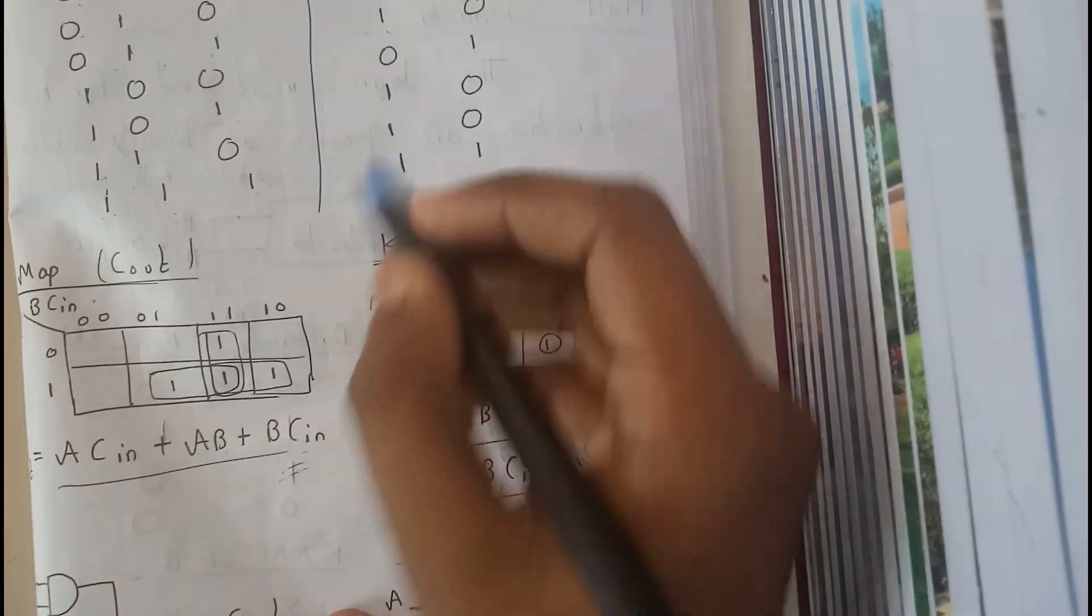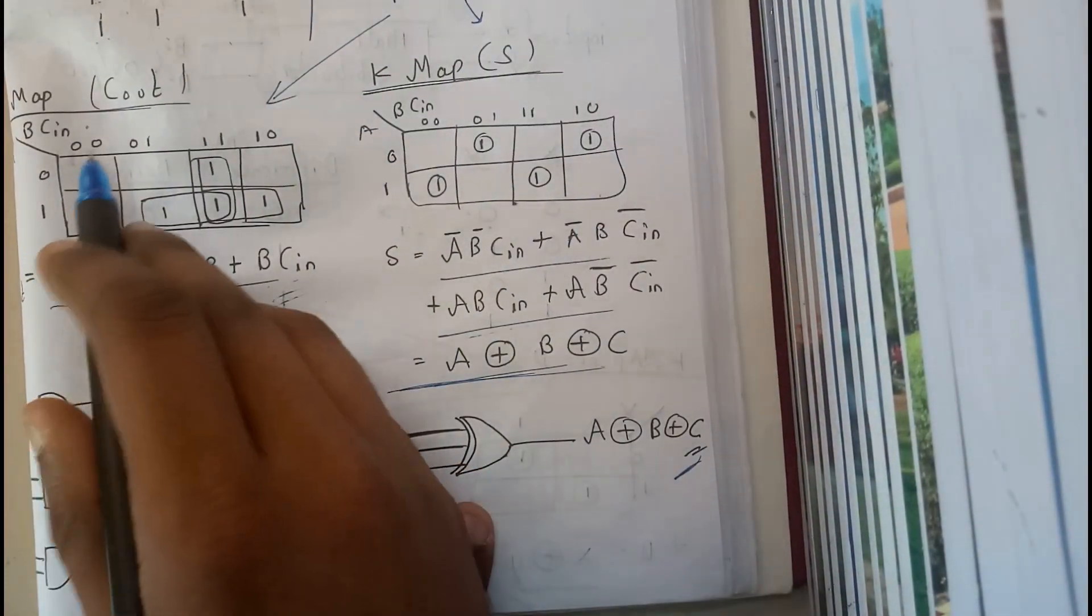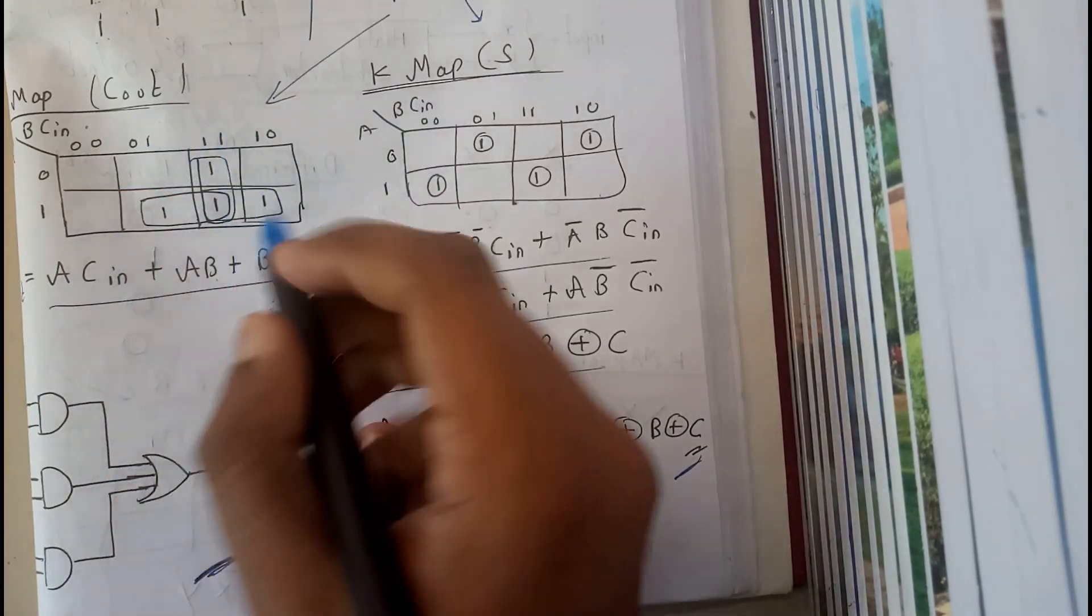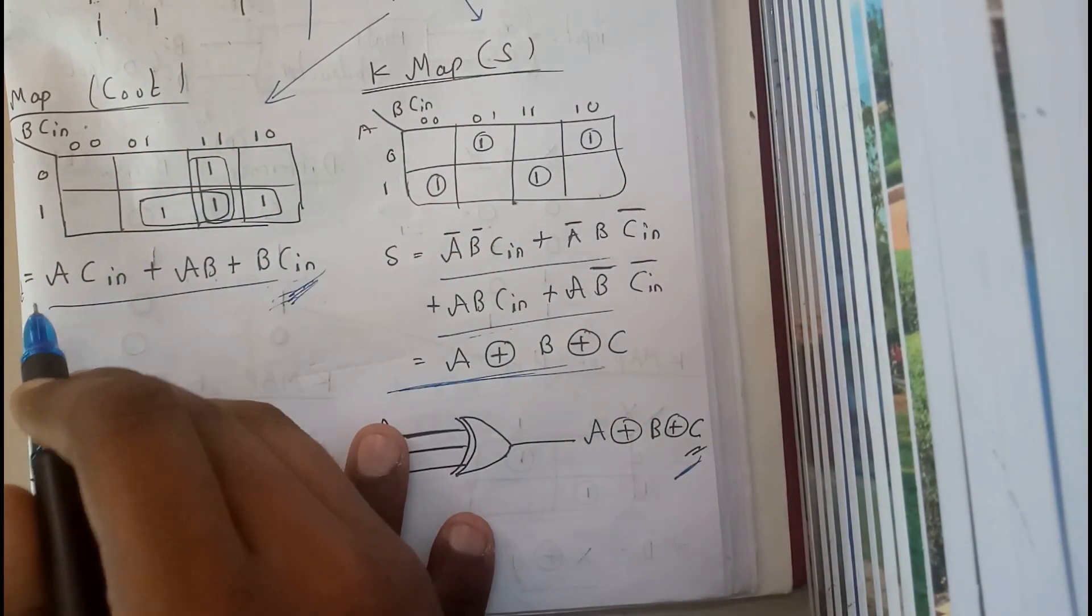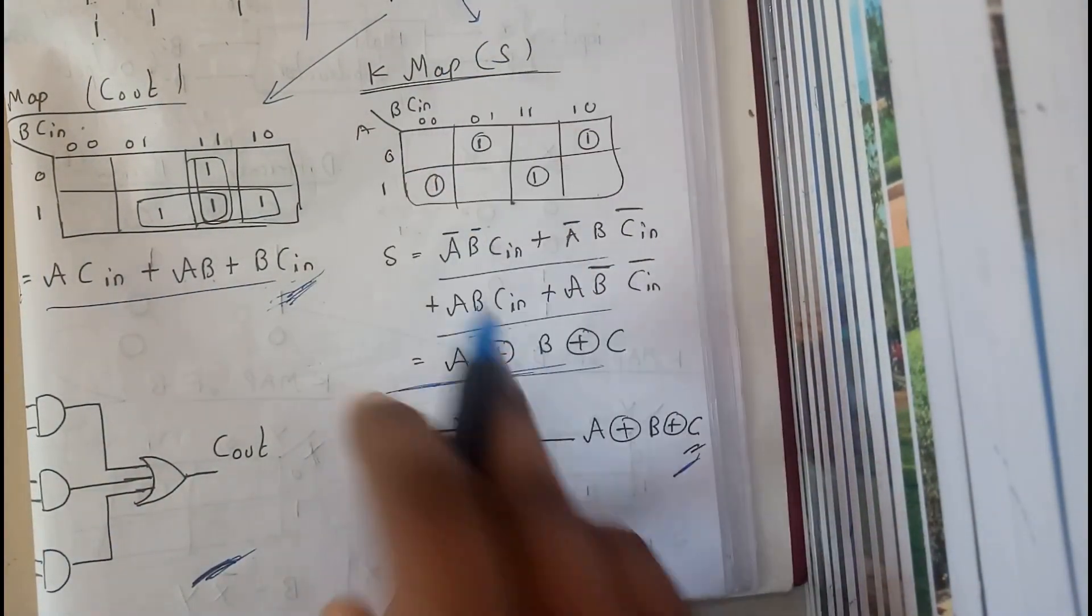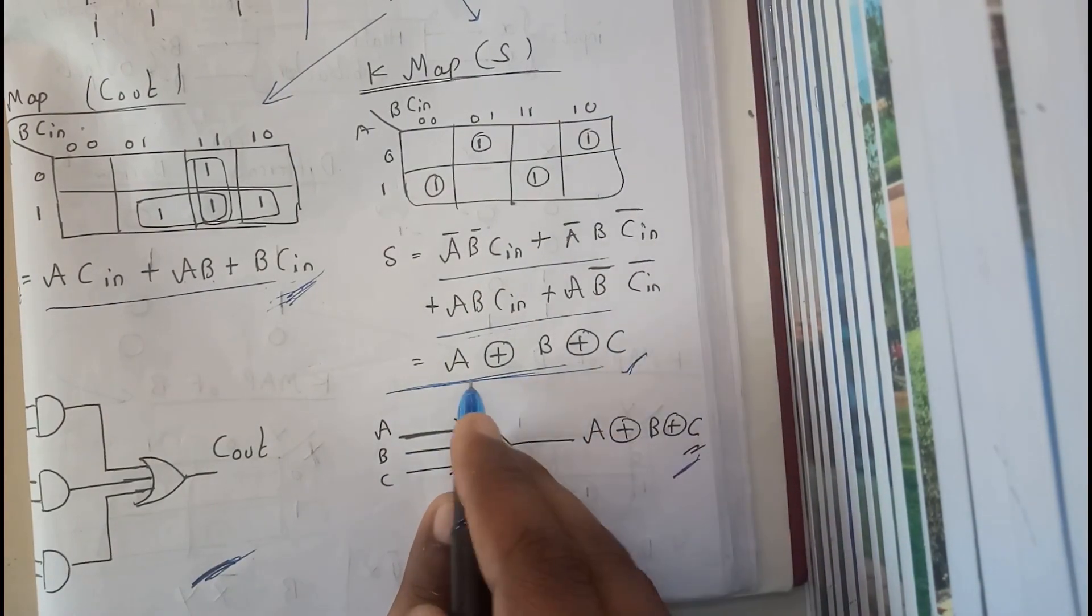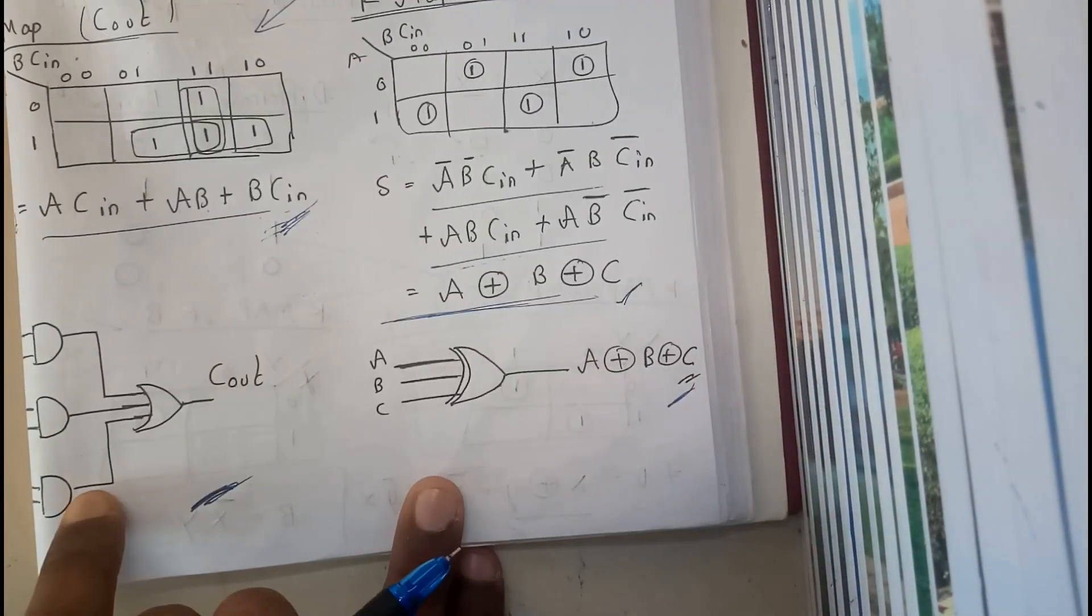So that's how we got this. So similarly we will be doing K map for carry and K map for sum. So now whenever I did for carry, I got this guys. It is nothing but AC plus AB plus BC. And so whenever I did for sum, I got the exclusive or function between A, B and C. So this will be the short diagram.